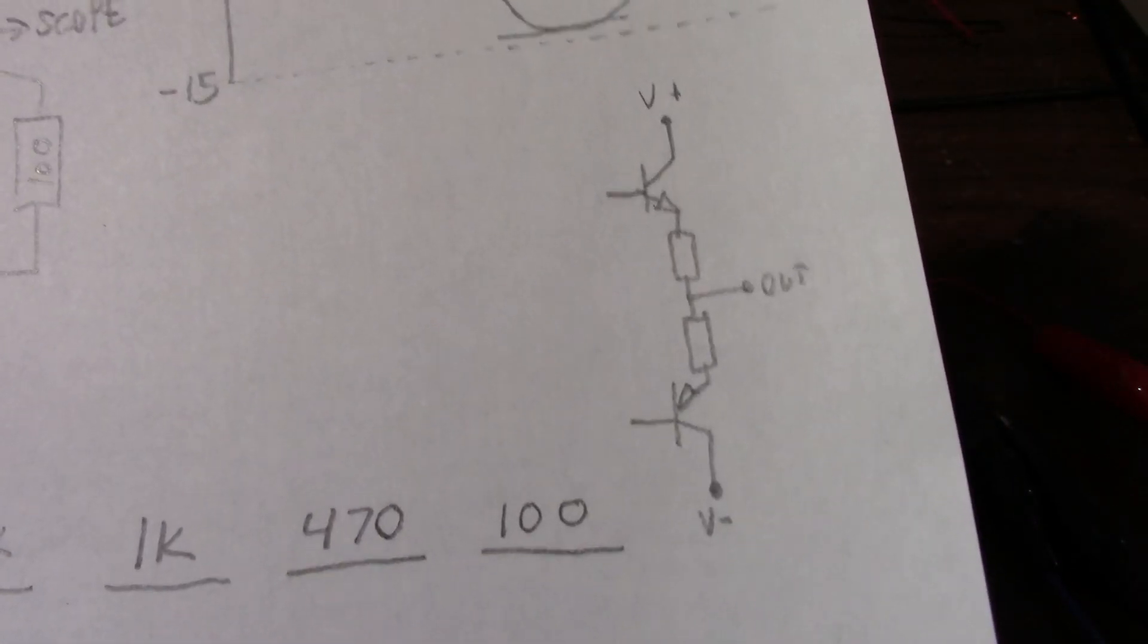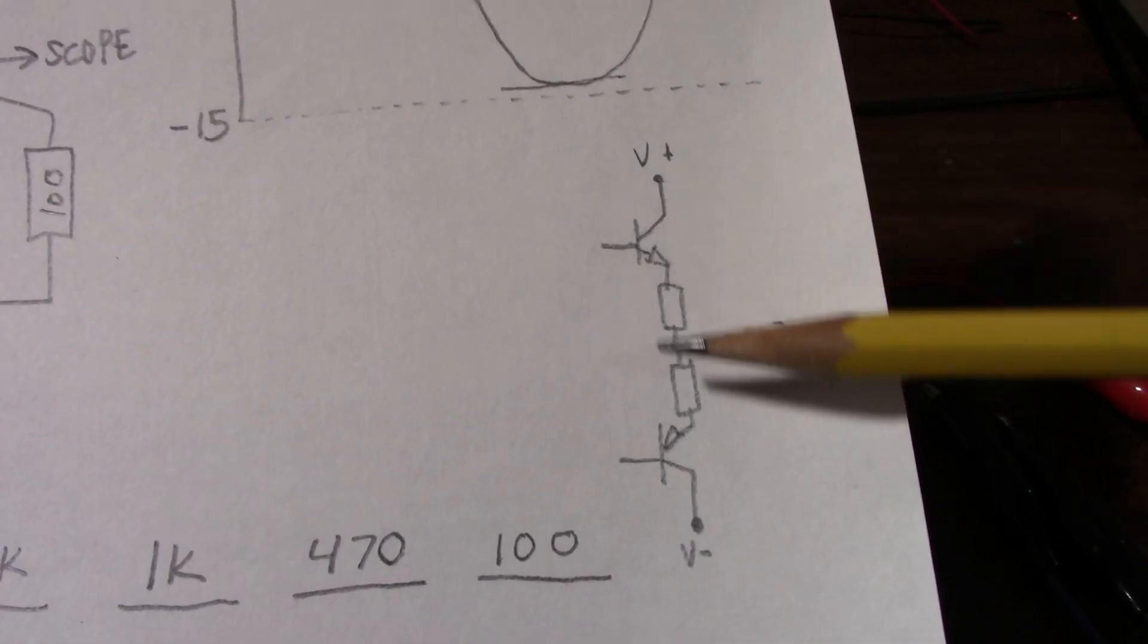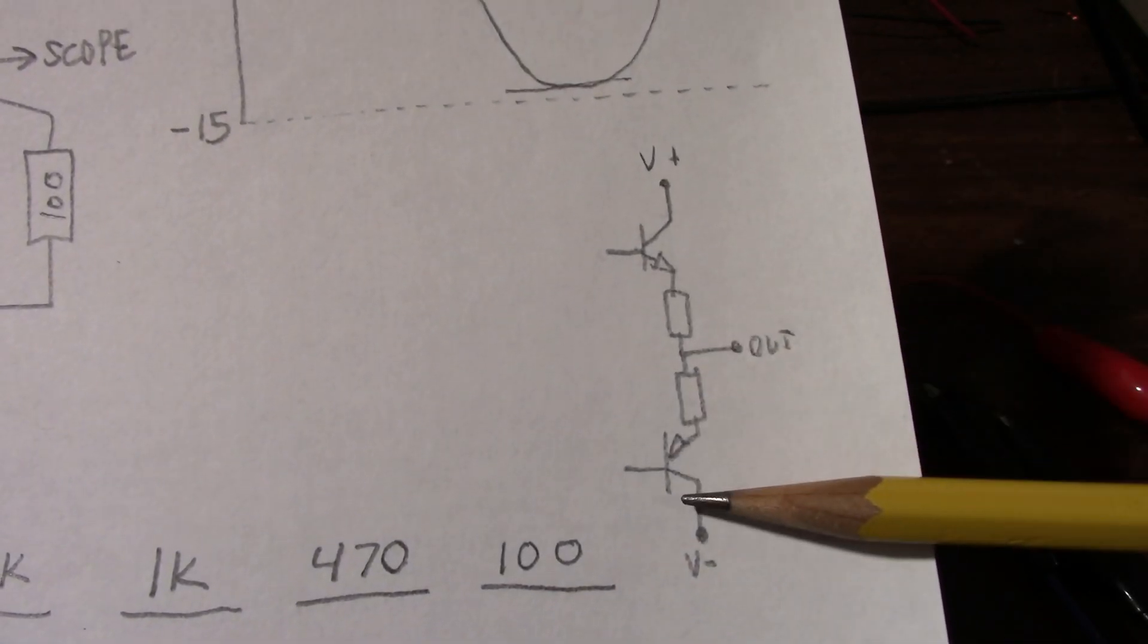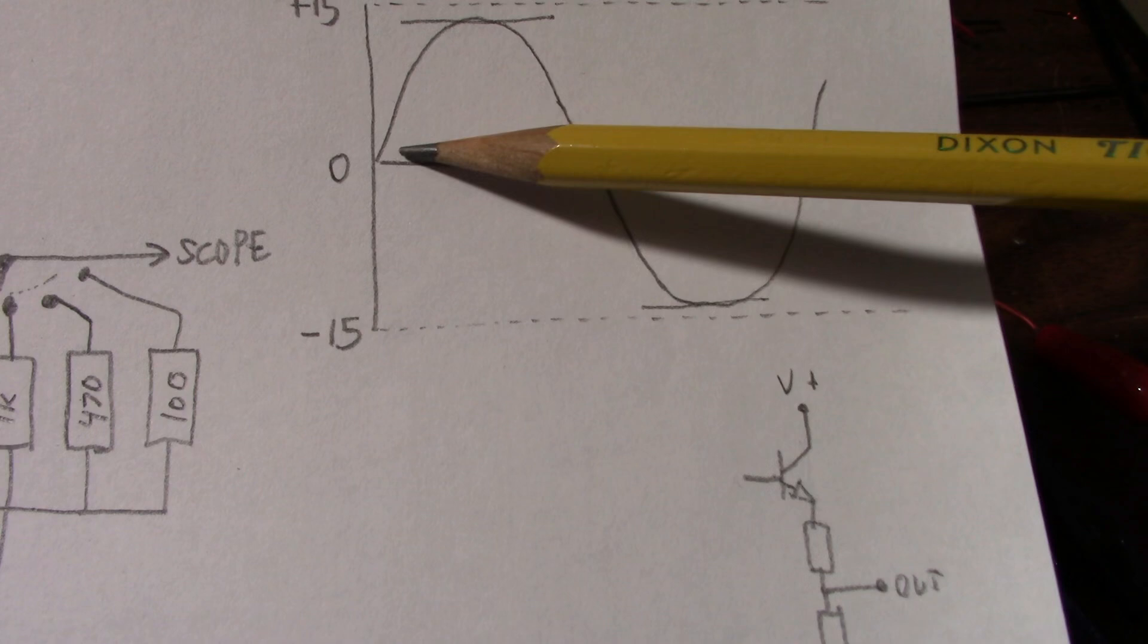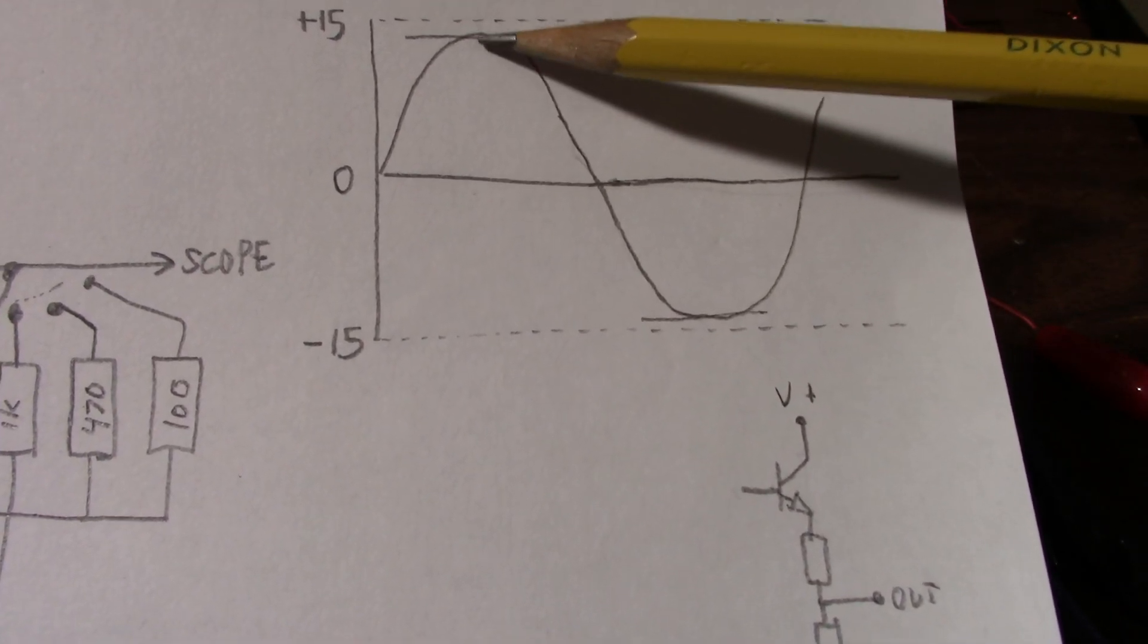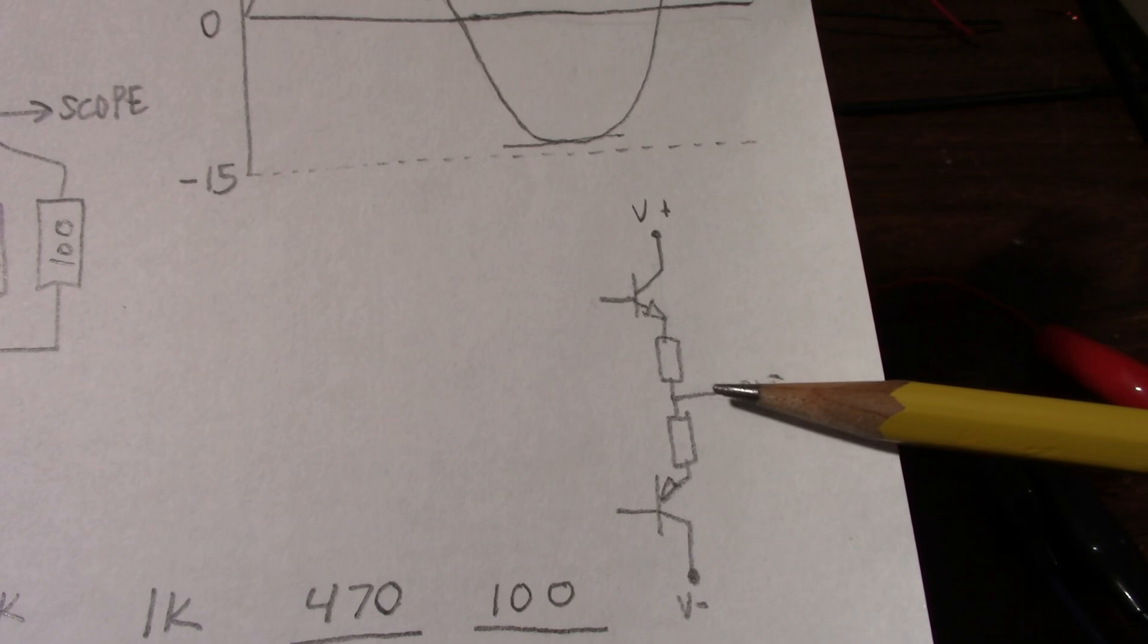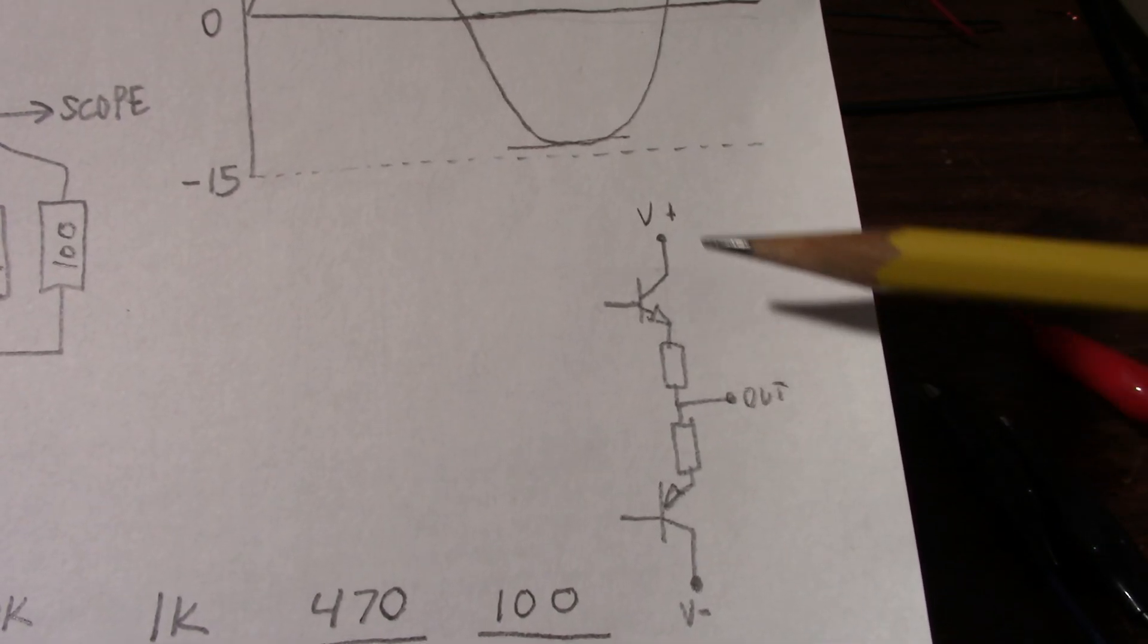So let's say the sine wave is swinging up to near the peak here and we have a load connected to the output. So the positive side of the output stage is conducting current and going out into the load and back to ground.